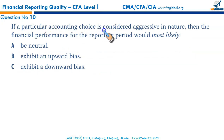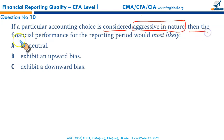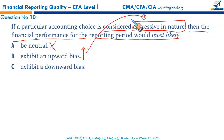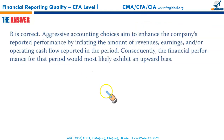If a particular accounting choice is considered aggressive in nature, then the financial performance for the reporting period would most likely exhibit an upward bias — your earnings are higher, your balance sheet totals look good. Upward bias is an aggressive approach, and downward bias represents a conservative approach. B is the correct option.